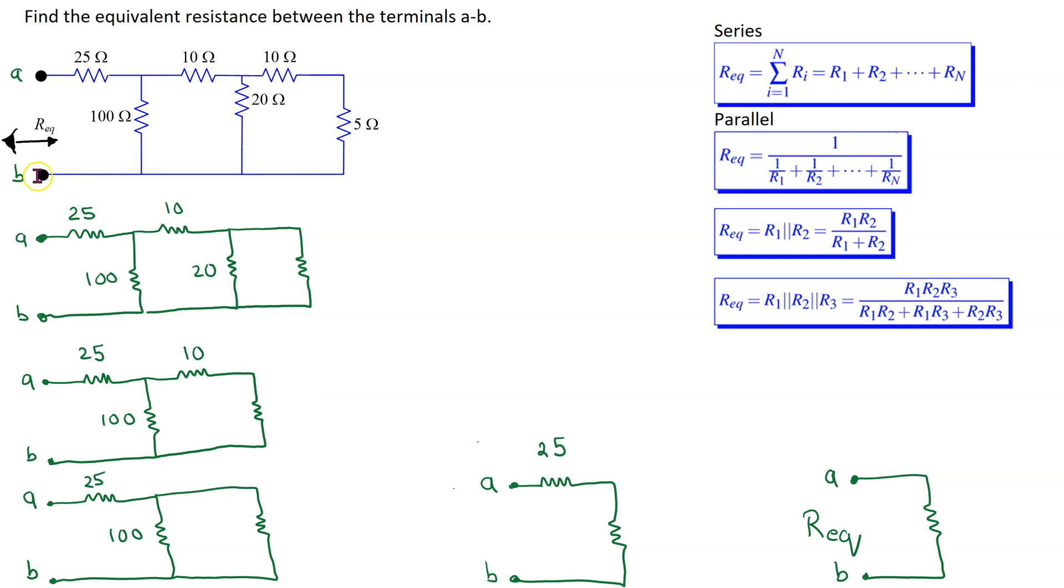To find the equivalent resistance, we start at the far end and begin combining the resistors in either series or parallel, collapsing the circuit back towards the input.